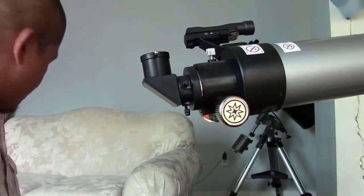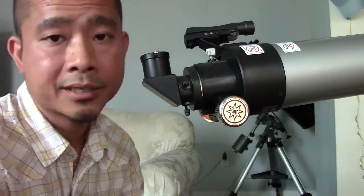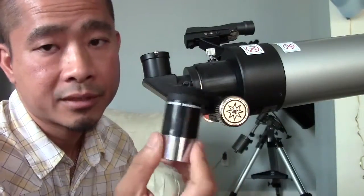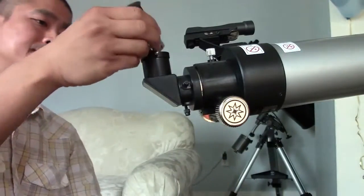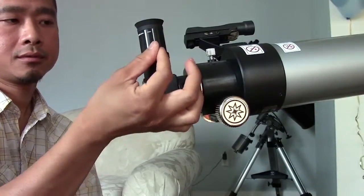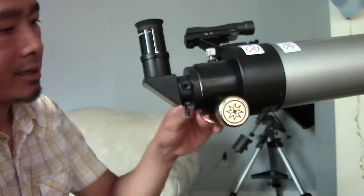After that, if you want to start looking at an object, I suggest you start off with a low power eyepiece such as the 25mm. Put it inside the focuser, tighten up the screw, and adjust focus.